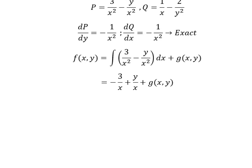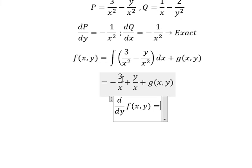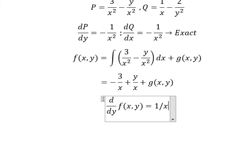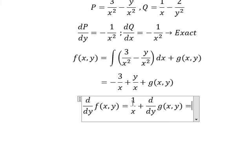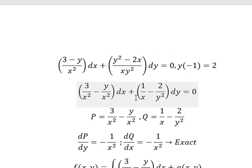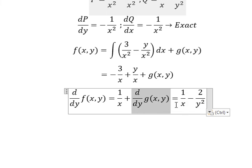Next, we need to do the first derivative of the function F with respect to y for both sides. The term negative 3 over x does not have y, so we get 0. The term y over x has y, so we get 1 over x. And we know that this equals Q. Now we simplify 1 over x from both sides.